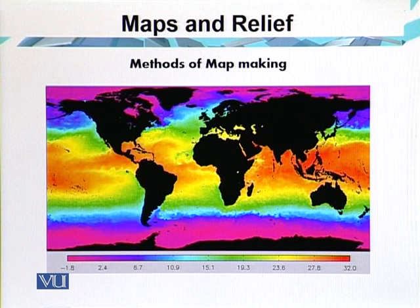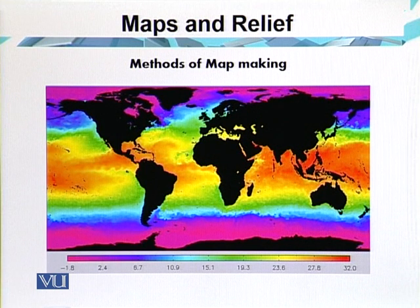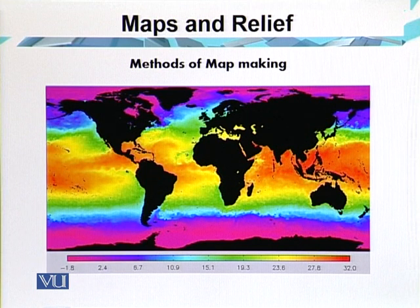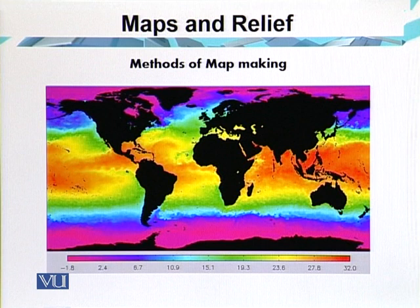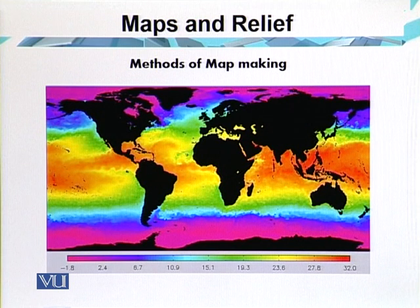The most important thing in map making is the method used. A cartographer, by unique skill and techniques, may give a lively touch to drawing which otherwise becomes less attractive. There are various ways by which the Earth is mapped. Computer maps are being precisely constructed, and satellites are also being used for mapping large areas of the Earth quite accurately. The method of mapping depends on the size of the area, the degree of accuracy aimed at, and the amount of detail required.